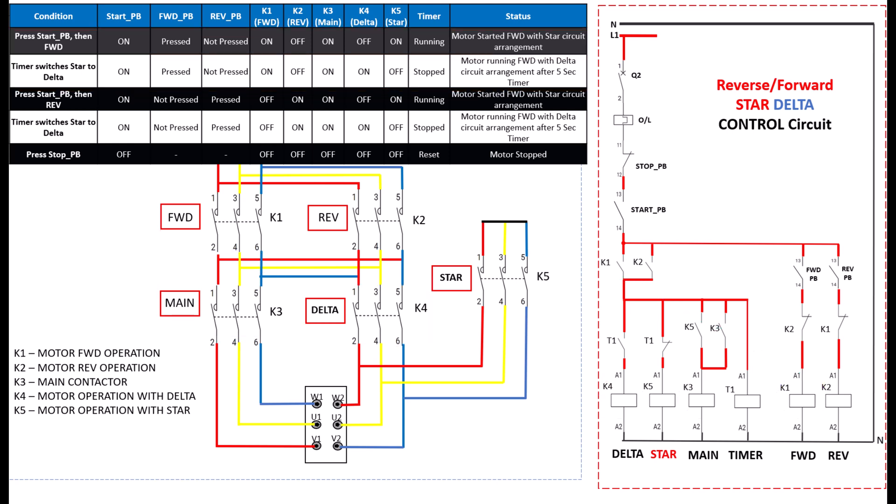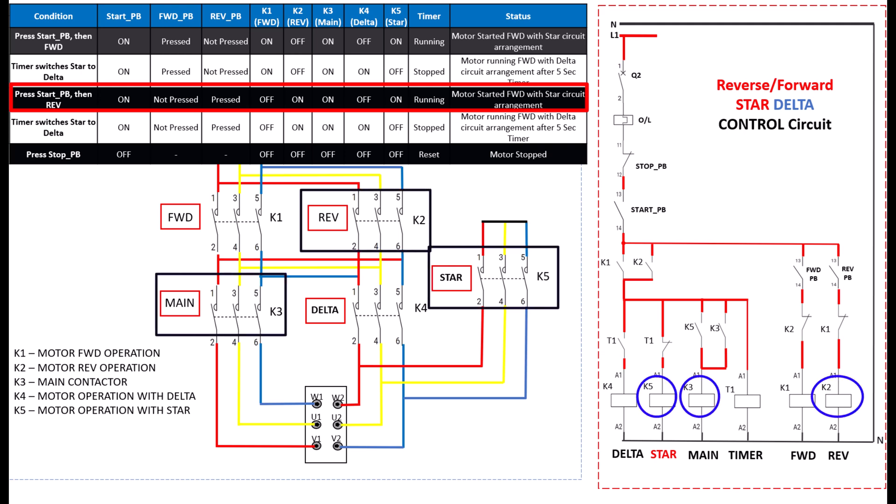Now case two. You need to run the motor in reverse direction with star configuration and then delta configuration. When you press the start push button followed by the reverse push button, what happens? K2 reverse contactor, K3 main contactor, and K5 star contactor engage. The motor starts running in the reverse direction using the star configuration. After five seconds, the timer deactivates K5 star contactor and energizes K4 delta contactor through the interlock. Now the motor continues to run in the reverse direction in full delta mode.